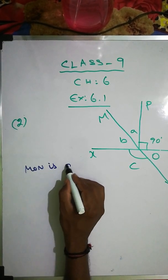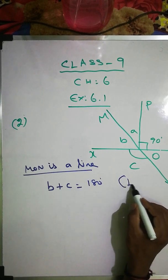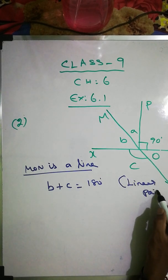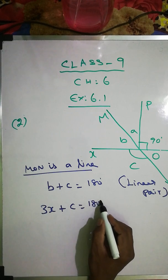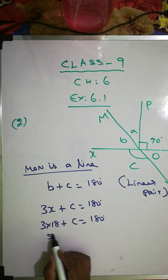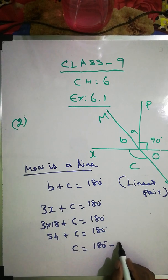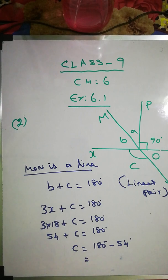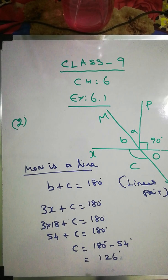MON is a line, so B plus C equals 180 degrees — it's a linear pair. B equals 3x and x equals 18, so B equals 54. Therefore 54 plus C equals 180, so C equals 180 minus 54, which gives C equals 126 degrees.